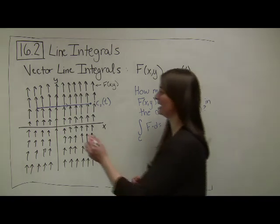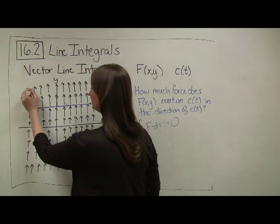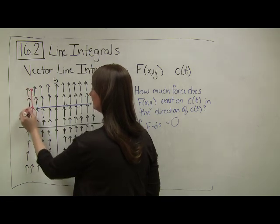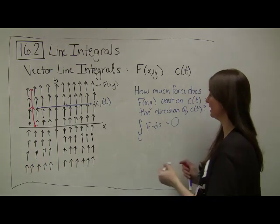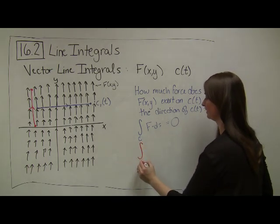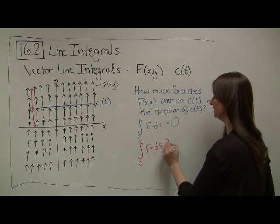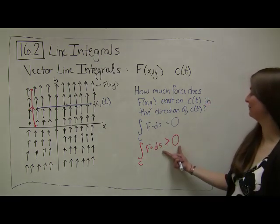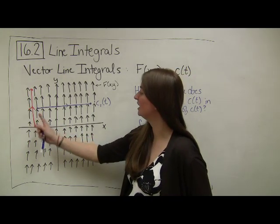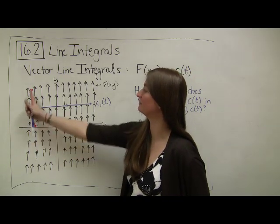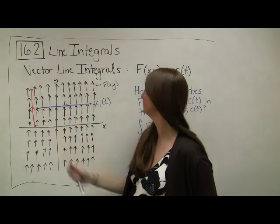Whereas let's say that I had a path that started down here and went up this way. This is my red path going in the positive direction. We see that for my red path, it's going to be greater than 0. I'm not going to compute exactly what it is, but really at each point along here the vectors are helping me and they're pushing me in exactly the same direction that I'm traveling.